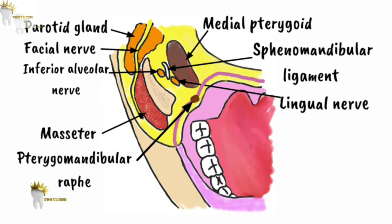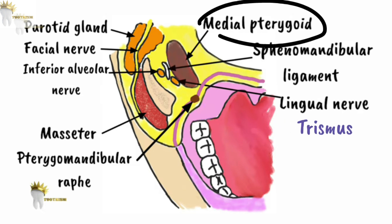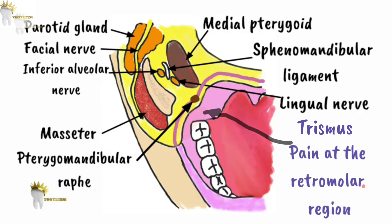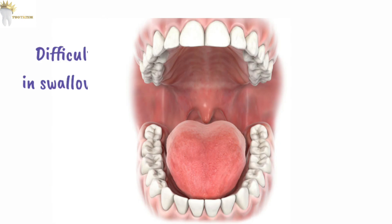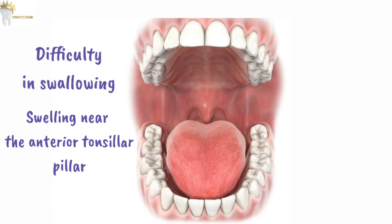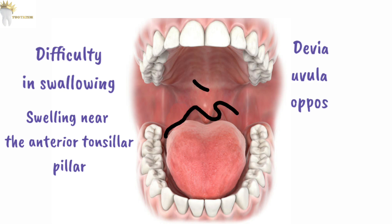Clinically, when this space is infected, there will be trismus because of the edema and inflammation of the medial pterygoid muscle. There will be pain at the retromolar region, that is behind the molar. The patient will have difficulty in swallowing. We can see swelling near the anterior tonsillar pillar and deviation of the uvula to the opposite side. These are the characteristic features of infection in this space.